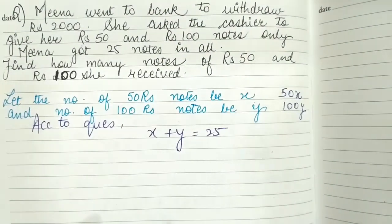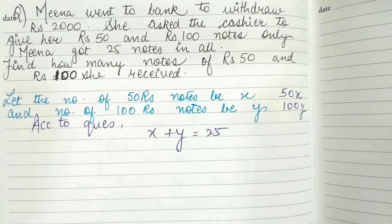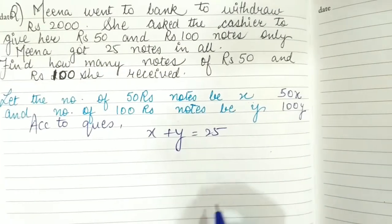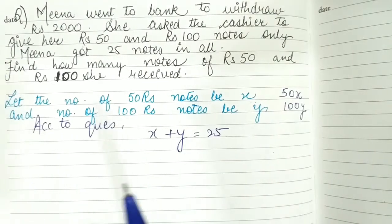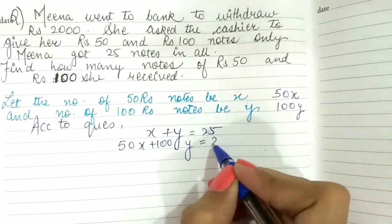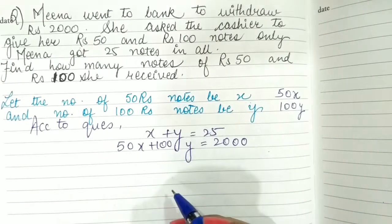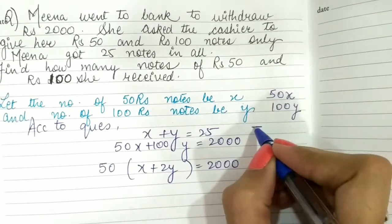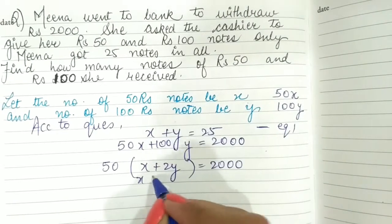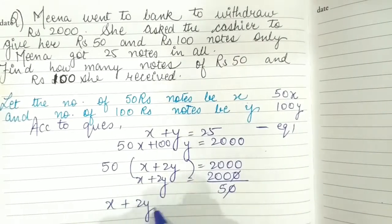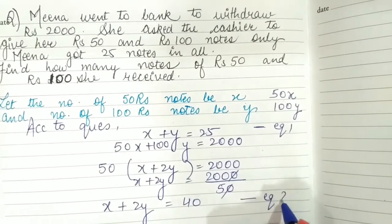For example, if you have 9 ten-rupee notes, total amount is 90 rupees — 9 multiplied by 10. Similarly, 50x is the amount from 50 rupee notes and 100y from 100 rupee notes. Total notes gives equation 1: x plus y equals 25. Dividing 50x plus 100y equals 2000 by 50 gives equation 2: x plus 2y equals 40.